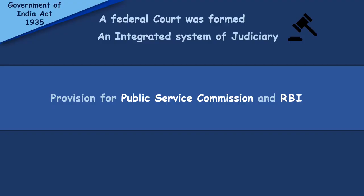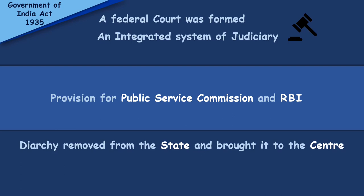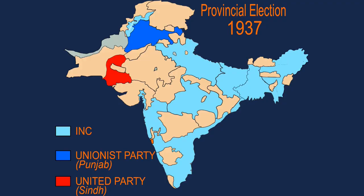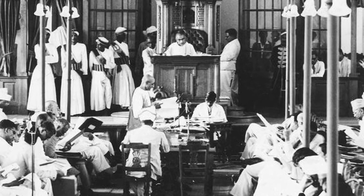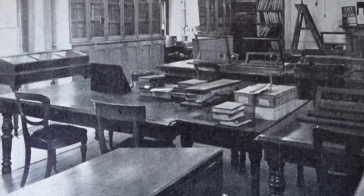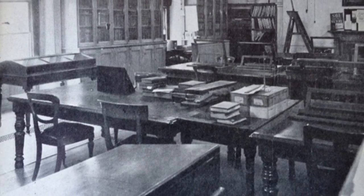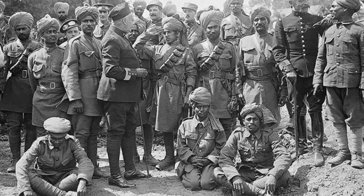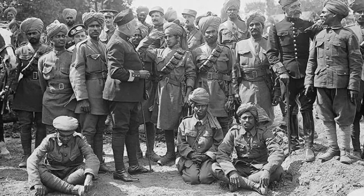Another key provision was that this act removed diarchy from the states and brought it to the centre, while provincial autonomy was established. Following this act, provincial elections were held in 1937. The Indian National Congress got a majority and formed governments in many provinces — it was like the first Indian government with Indian leaders in power. But after 27 months in office, Congress ministries resigned as a protest against India's inclusion in the Second World War.